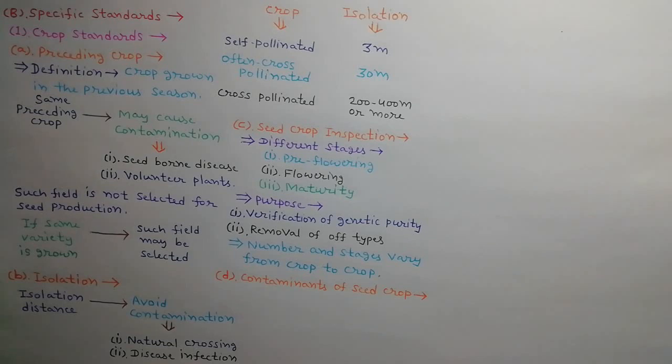Various contaminants are found in seed crops such as objectionable weeds, diseases, off-types, and inseparable other crop plants.